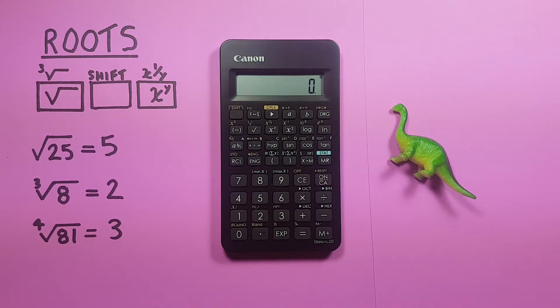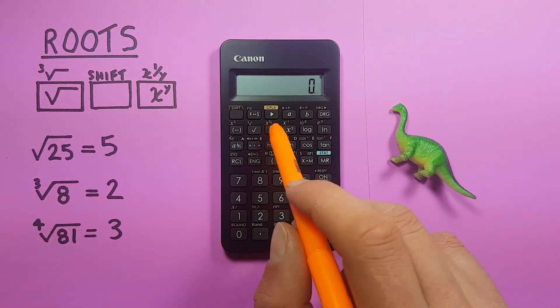But what if we want to find a root that isn't a square or a cube root? Well, if we wanted to do that, we would have to use the second function of this x to the y key.